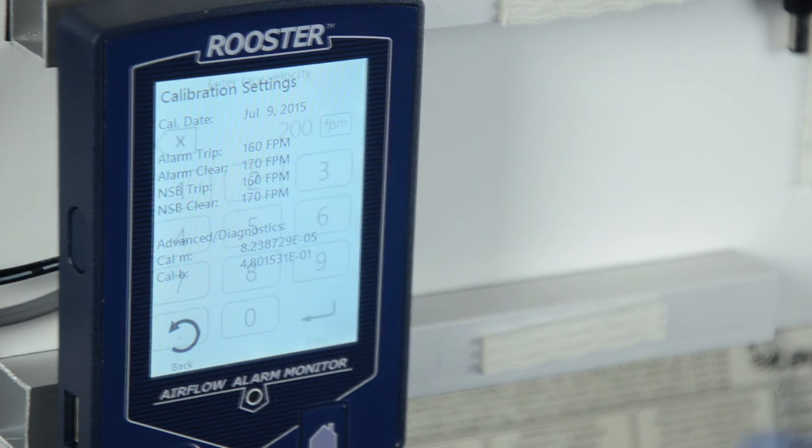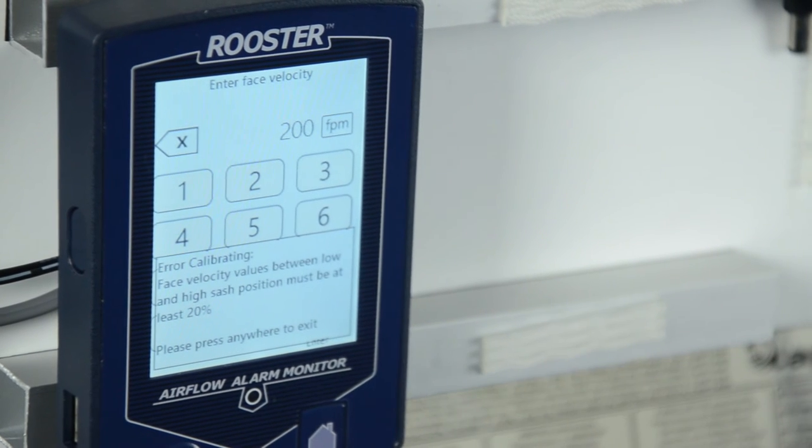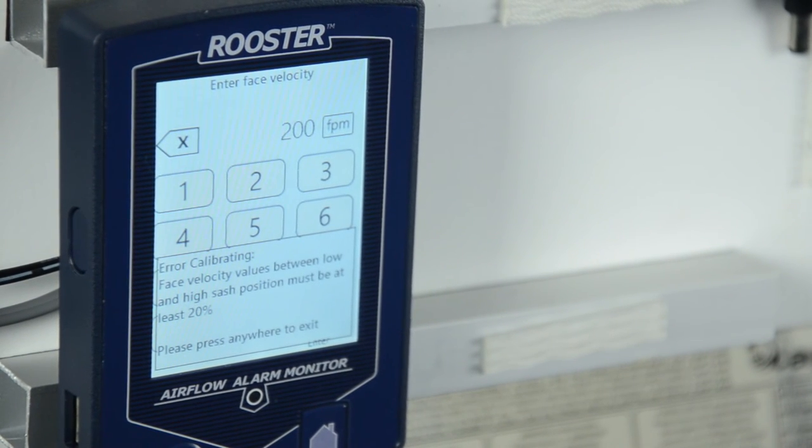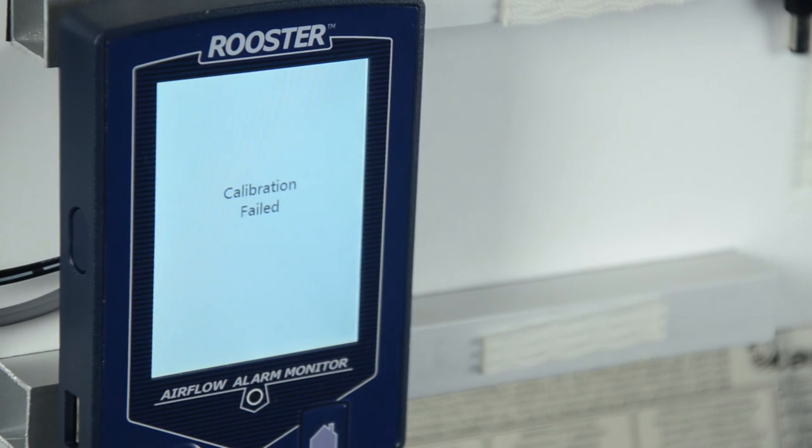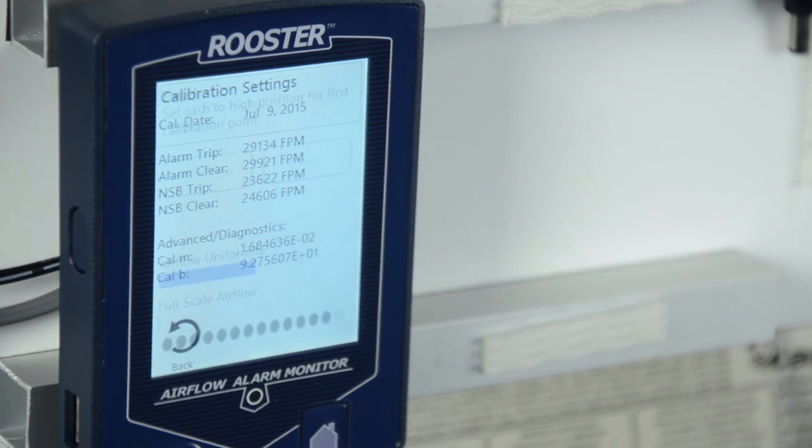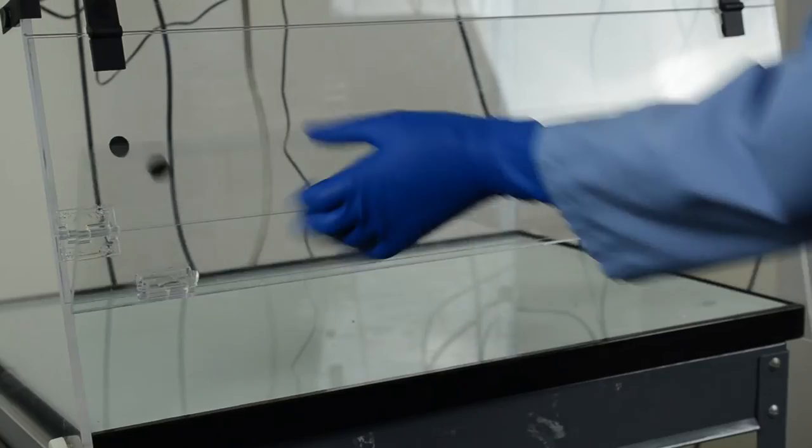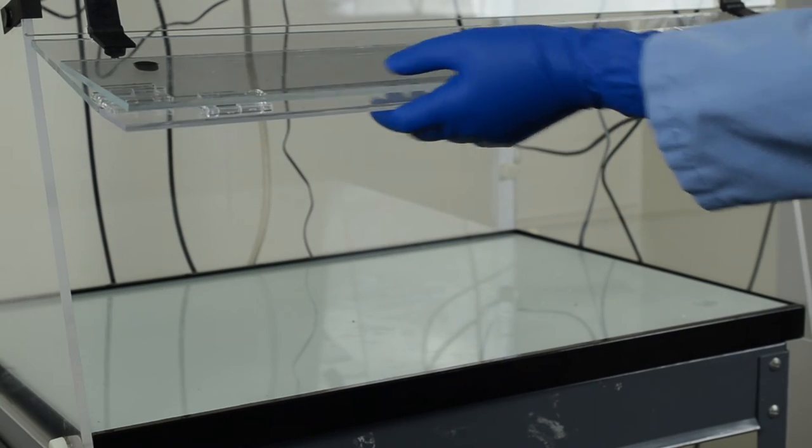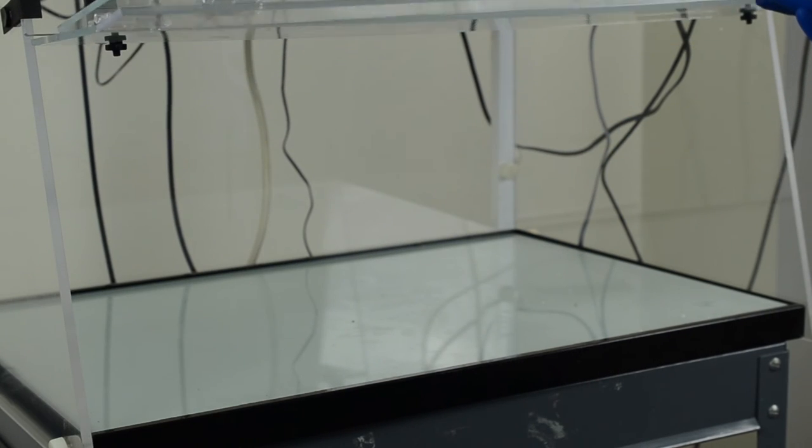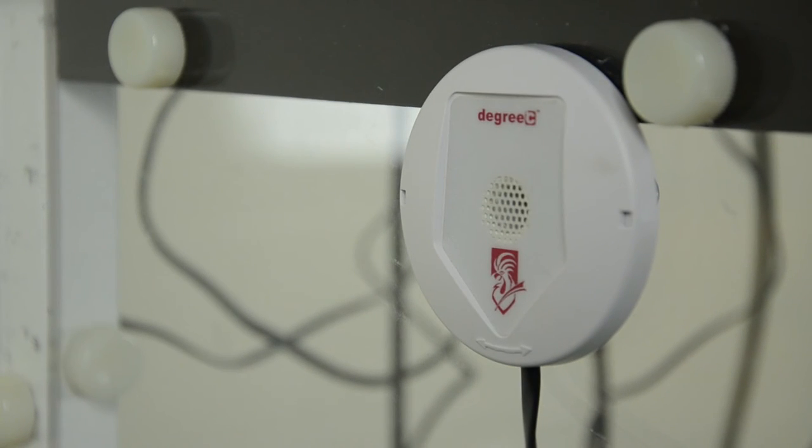If you are receiving a calibration failure message, there may not be enough of a difference between your sensor readings. Repeat the calibration procedure and try opening your sash to a higher position. You may also need to verify that your sensor is installed properly and that there are no airflow obstructions in your plenum area.